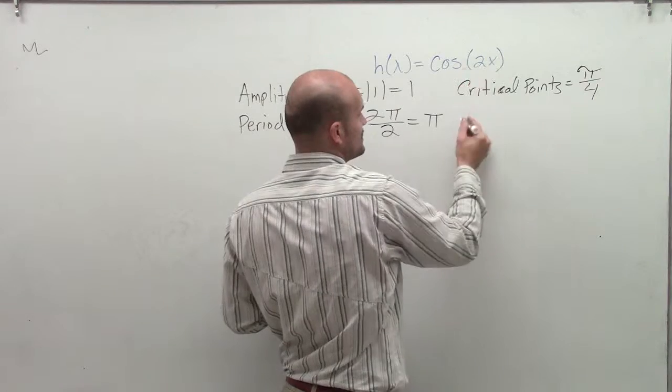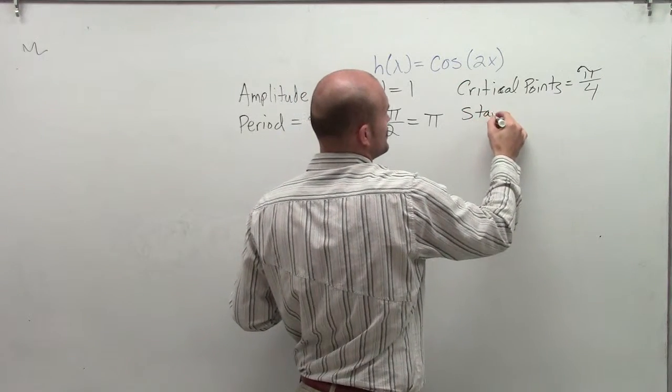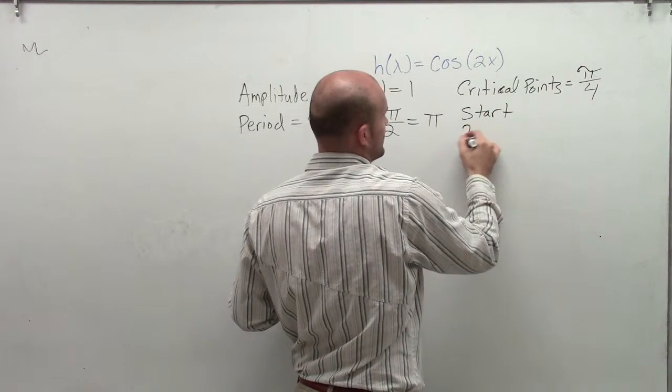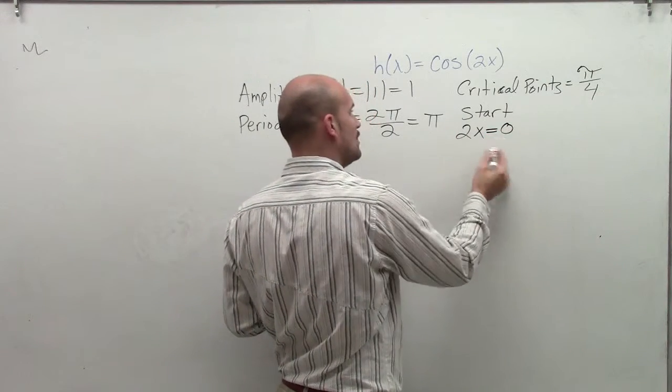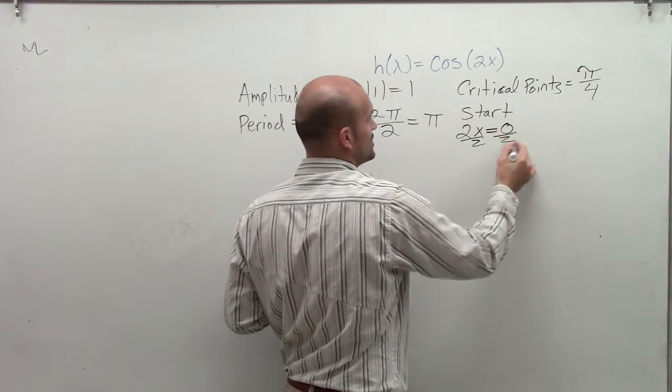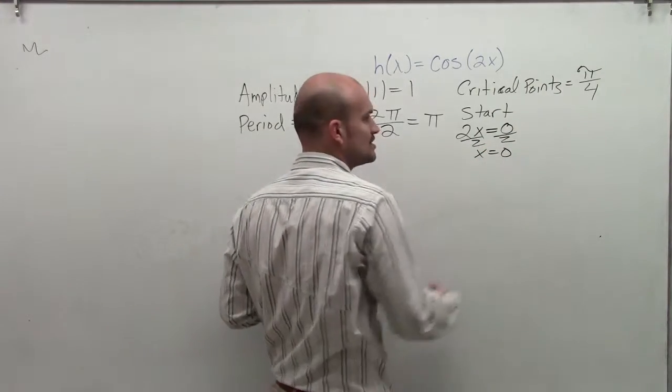We take whatever's inside our function and write the start. Is that going to change now that rather than x equals 0, we're going to say 2x equals 0? When I divide by 2 on both sides, I get x equals 0, so the starting point is still the same.